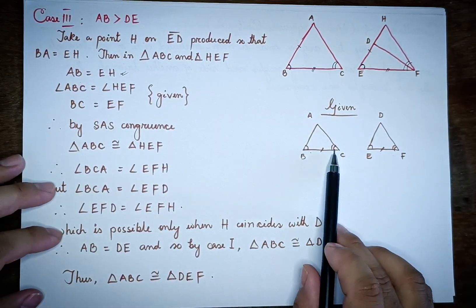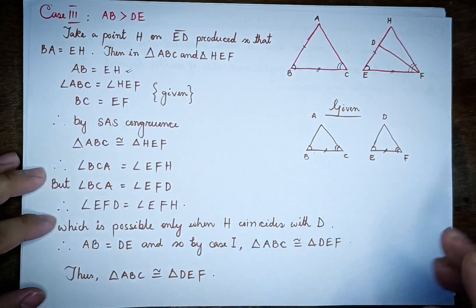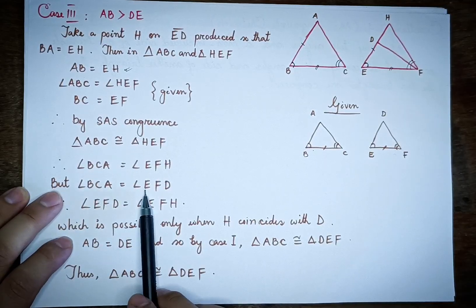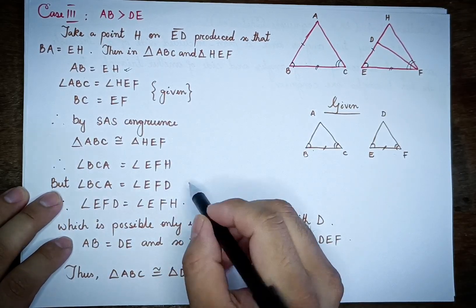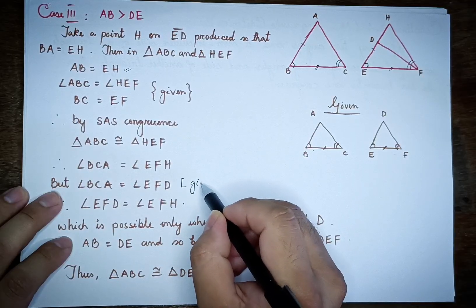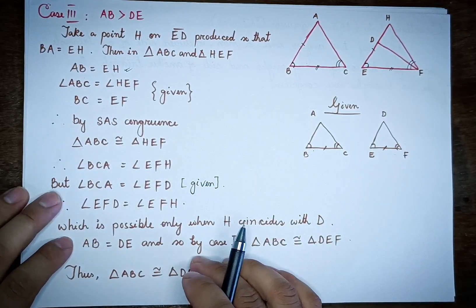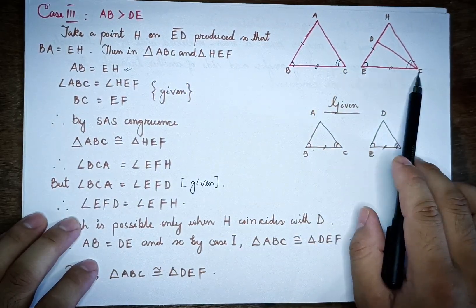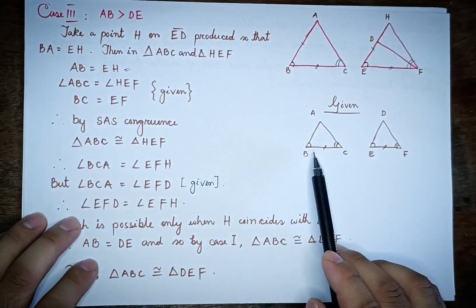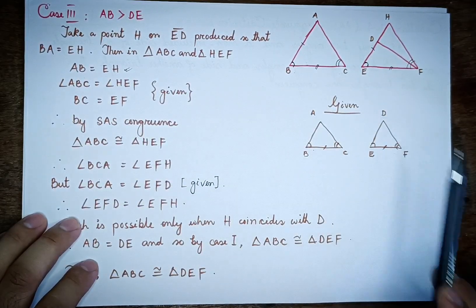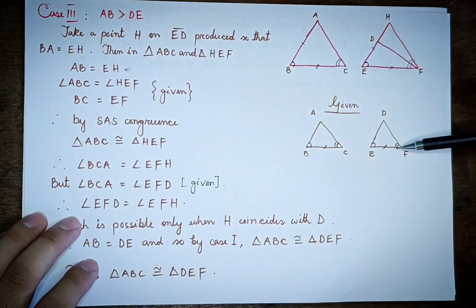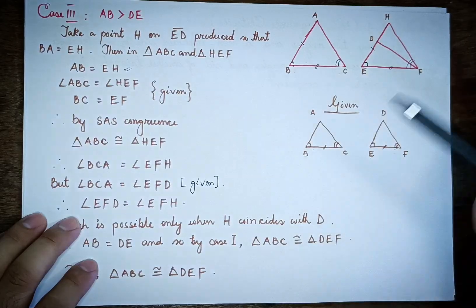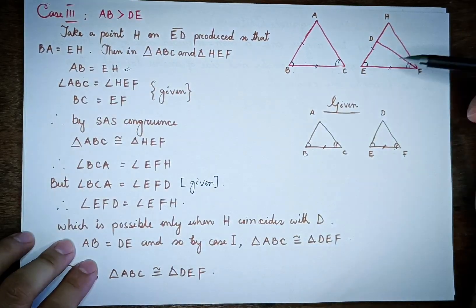So angle BCA is equal to angle EFD, and angle EFD is equal to angle EFH. This means EFD and EFH are the same angle, so D and H must coincide.